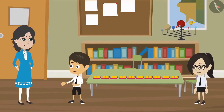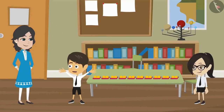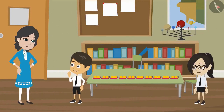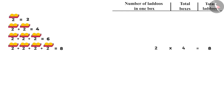That means if you multiply two by ten, will the answer be the same if you add two ten times? Yes, Reyanj. In the same way, you can convert the above additions into multiplication. If you want to find the ladoos in three boxes, multiply two by three. Similarly, for two boxes, multiply two by two. And to find the ladoos in one box, multiply two by one.